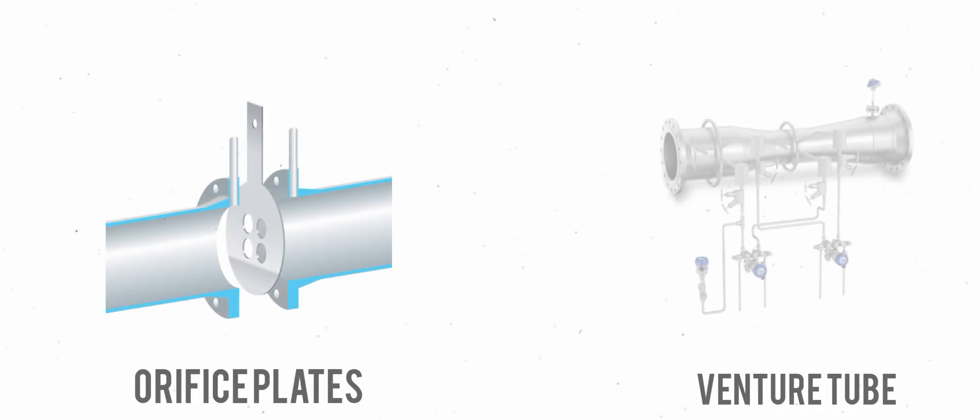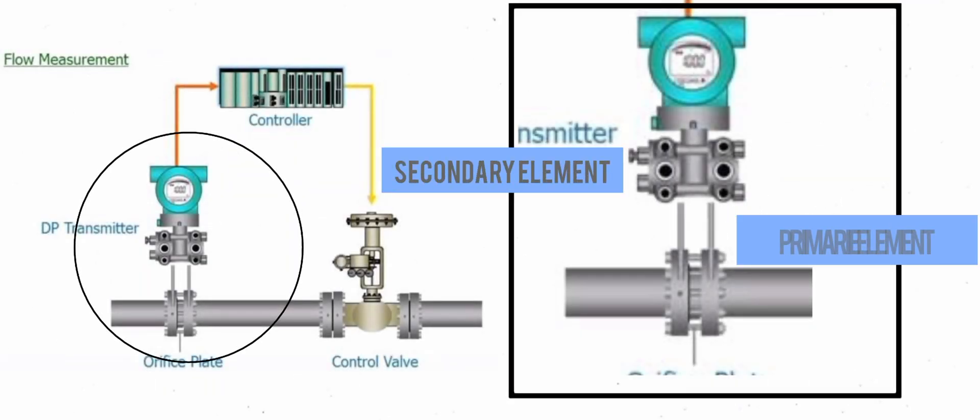Different types of primary elements include orifice plates, venturi tubes, and pitot tubes. The secondary element will measure the difference of pressure produced by the primary element as accurately as possible.